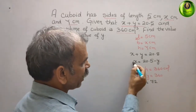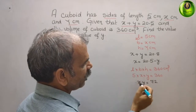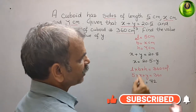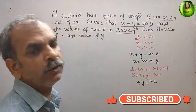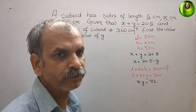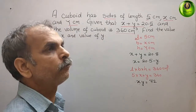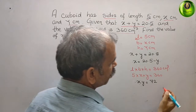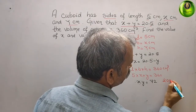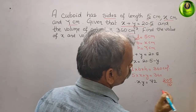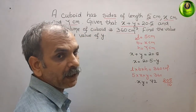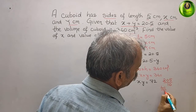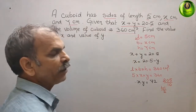Now substitute the x value into the equation. First, convert 20.5 into p by q form. 20.5 equals 205 by 10, and dividing by 5 gives us 41 by 2.